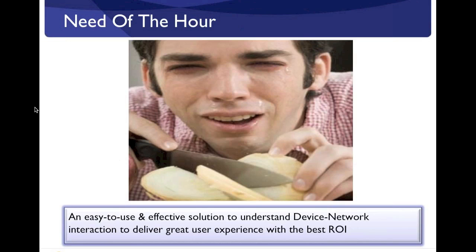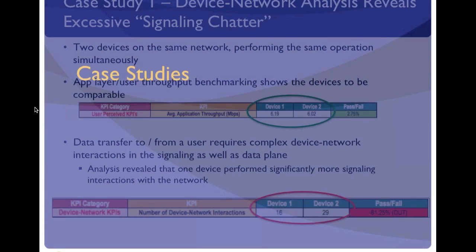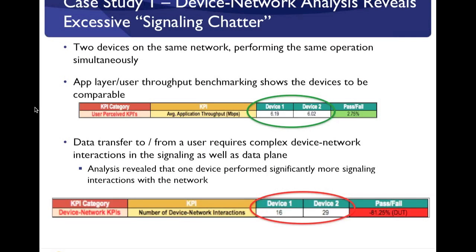We're going to talk about how we've developed an in-house solution and how it has been used for real-world case studies to help catch critical or fatal issues before device or network launch. I'm going to share three specific case studies where we've used our device network analytics solution to identify and isolate the root cause of critical issues before they hit the end consumer. The first case study is the scenario where device network analysis reveals excessive signaling chatter.